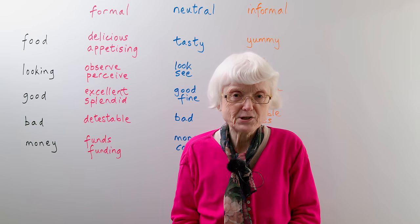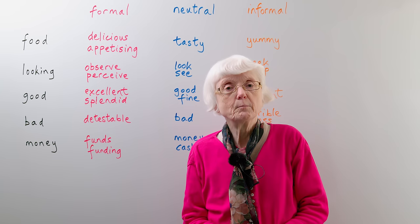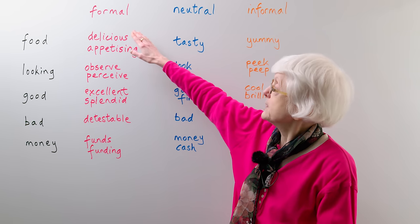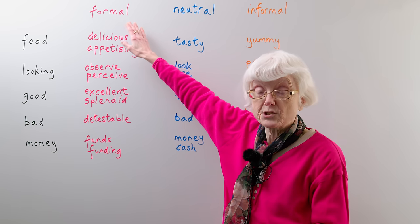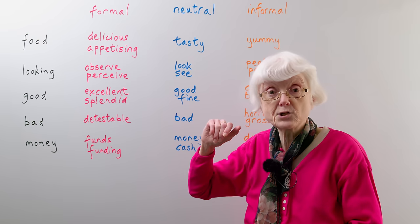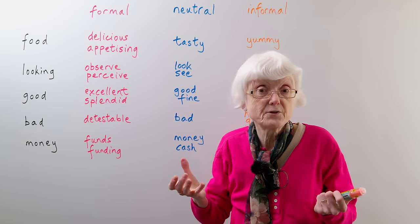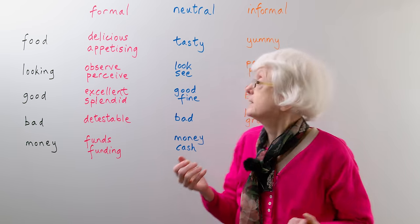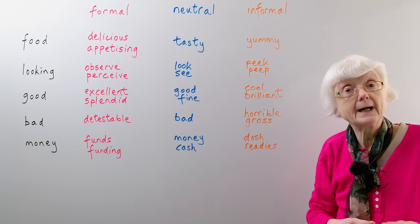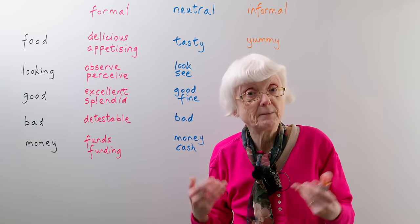What do I mean by registers? You can use different words that all mean the same thing, but they have a different effect and a different style. They often divide into rather formal language that sounds very formal and sophisticated, maybe academic. Then you have a neutral word — just an ordinary word for something that doesn't have a particular style. And then you have informal, which can often be a sort of colloquial slang word that you would only use in an informal group with friends and family.